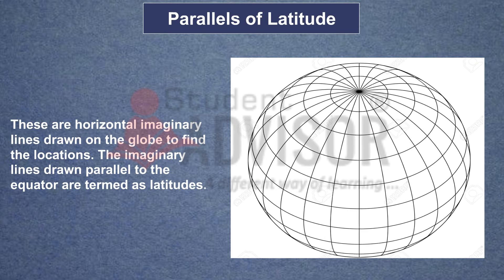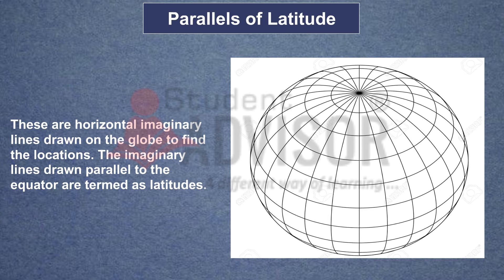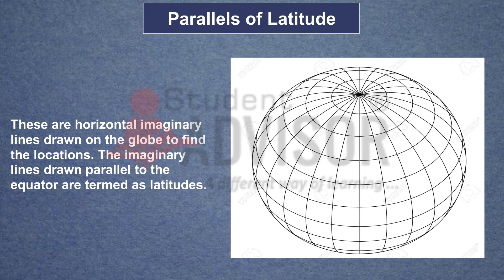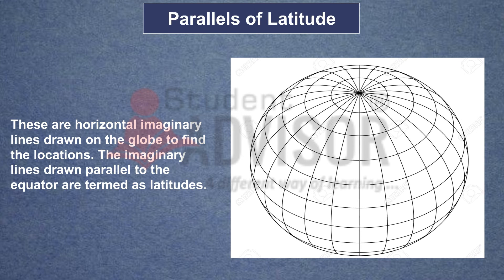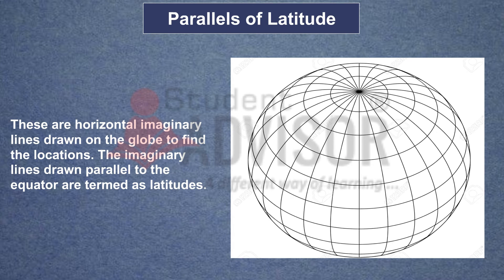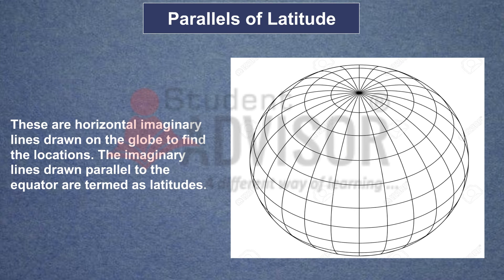Parallels of Latitude. These are horizontal imaginary lines drawn on the globe to find the locations. The imaginary lines drawn parallel to the equator is termed as latitude.